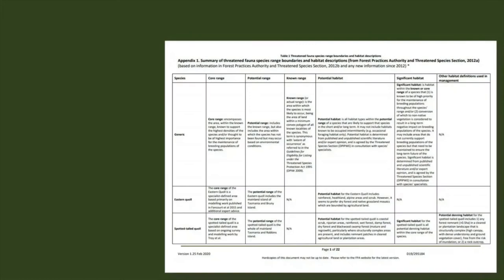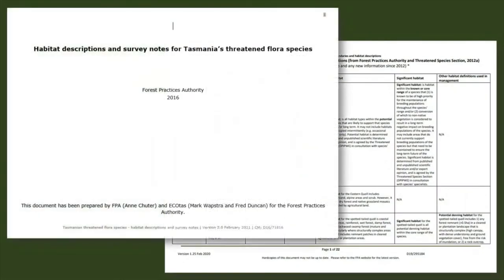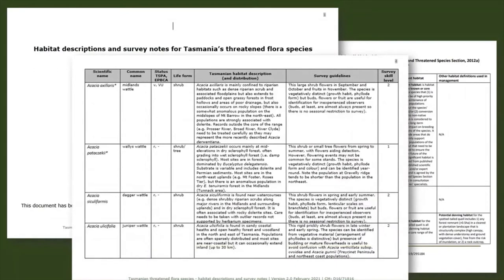You can access this information anytime by going to the BVD page on the FPA website. Here you can find the full list for all species including fauna habitat descriptions, flora habitat descriptions and flora survey guidelines, the latter of which have been combined into a single document.